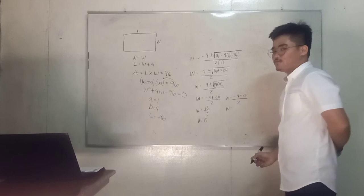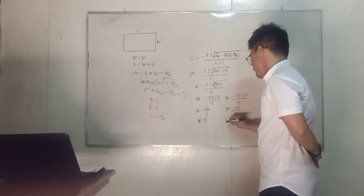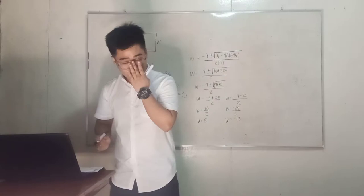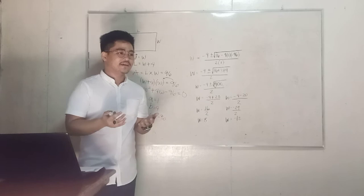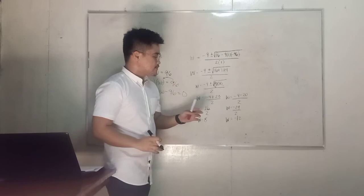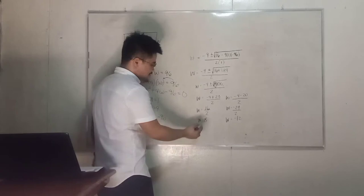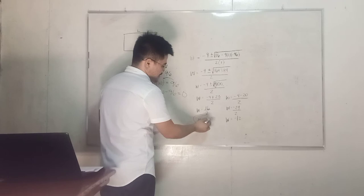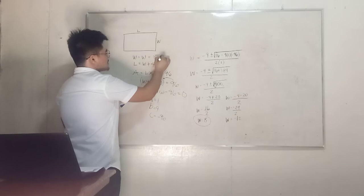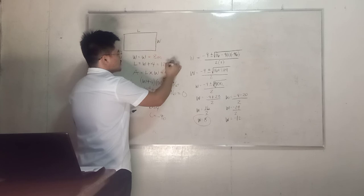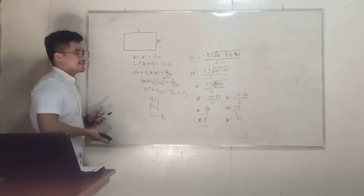Another one: negative 4 minus 20 is negative 24 over 2, negative 12. Now why is negative 12 not possible to be the width? Very good, because distance can't be negative. So we'll just consider the value of width as positive, which is positive 8. So the value of our width is 8 meters and the value of our length is 8 plus 4 equals 12 meters.